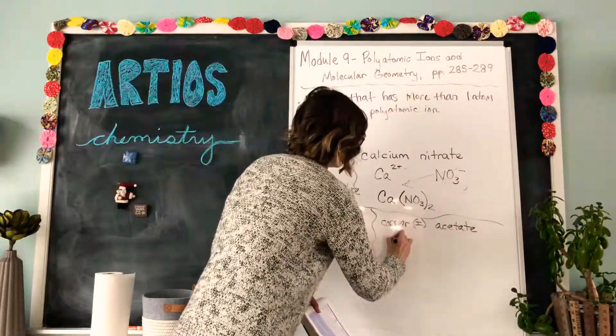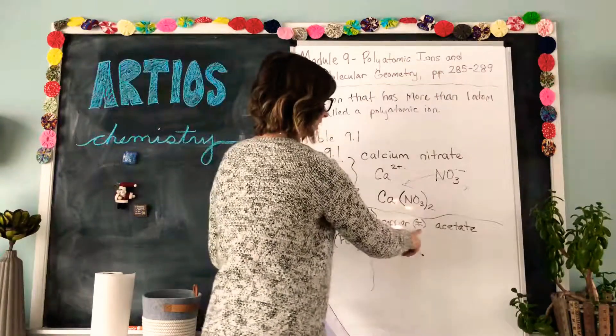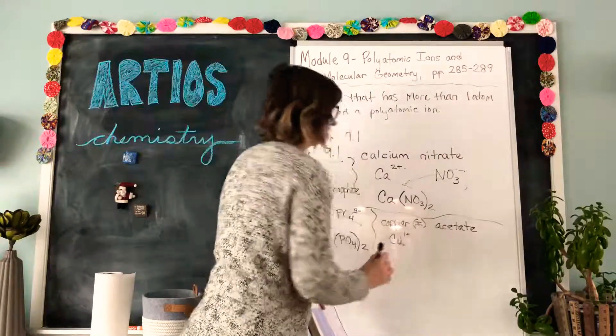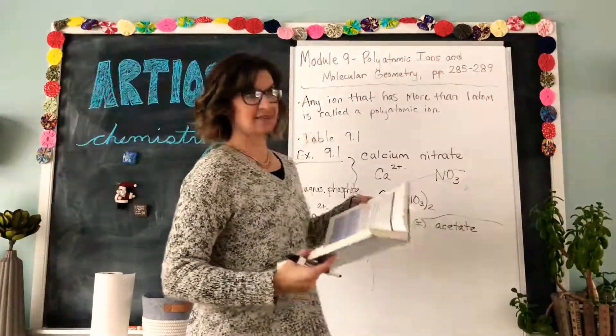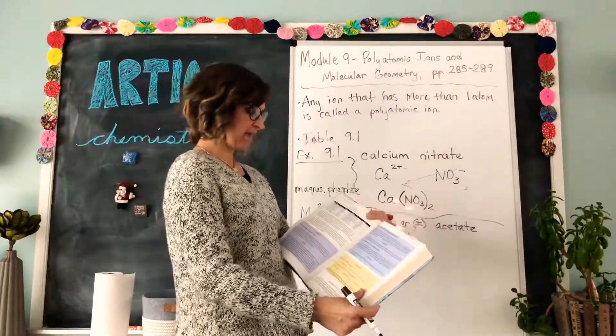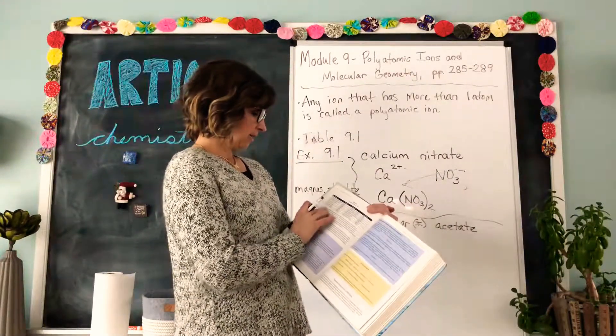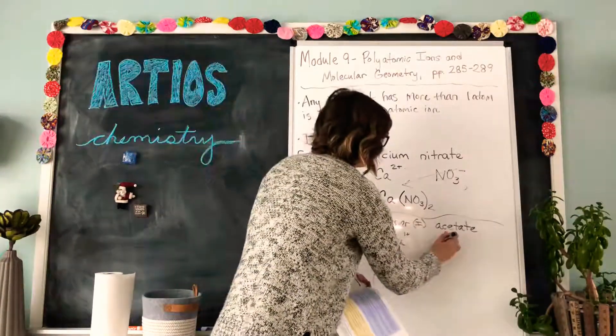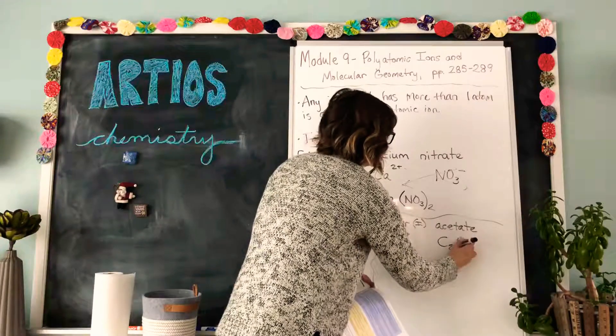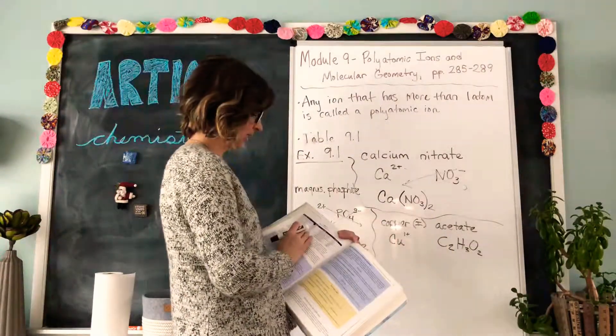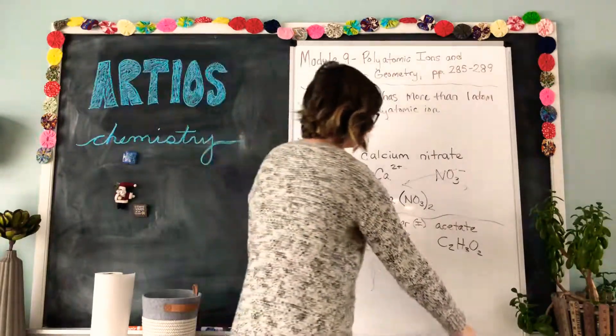So copper is Cu and the Roman numeral tells us that it has a one plus charge, one plus. Acetate, that does not sound like an element to me, so it must be on our important polyatomic ions table. And it is, it's a long one. It is C2H3O2 and it has a one minus charge.